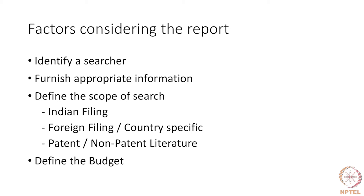There are different databases, both free and paid, which could be used for searching. The third thing is to describe the scope of the search. If you are filing an Indian patent, you would normally want the search to cover Indian patents and also relevant prior art. Or if your search is particularly for a foreign filing, you would stipulate that you need to understand what patenting exists on this invention in that particular jurisdiction. You could also stipulate whether the search should contain patent literature and non-patent literature. In all these cases, you would be describing the scope of the search, based on which the search report will be generated.